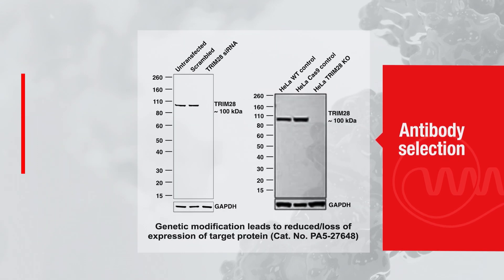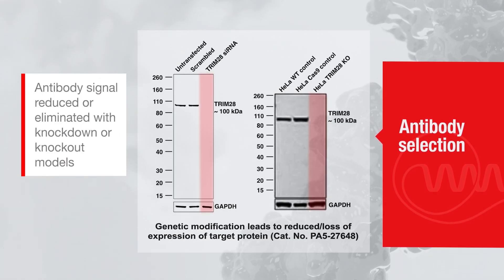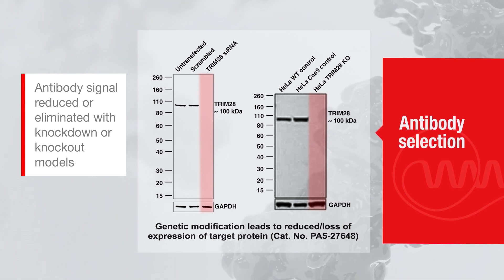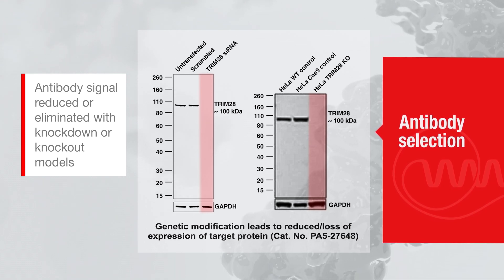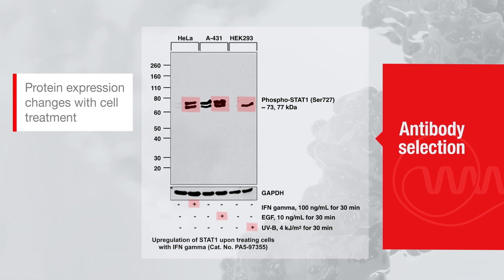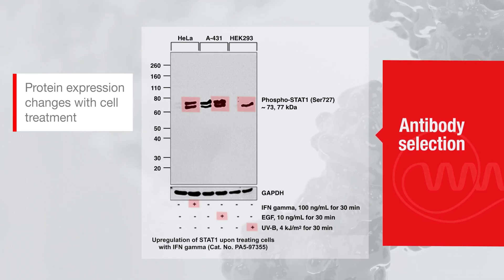Additionally, an siRNA-mediated knockdown or a CRISPR-Cas9-mediated knockout model shows the corresponding reduction or absence of signal from the antibody. Another example includes cell treatment to capture antibody performance in accordance with changes in protein expression. These are just some examples of methods used to ensure specificity in Western blotting with our advanced verification specificity tests.